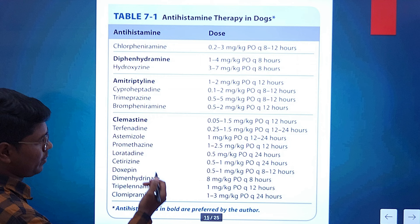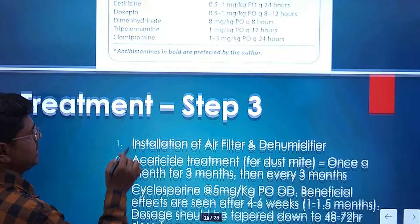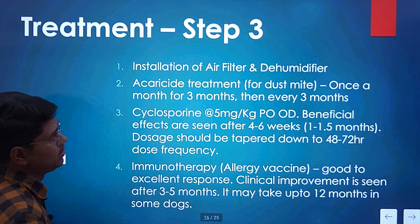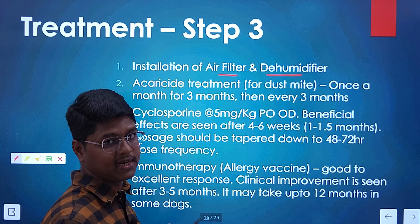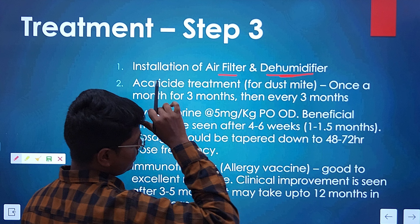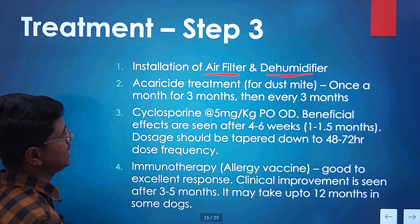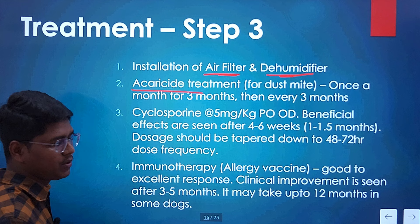These are some common antihistaminics you can use — you can pause the video and take a screenshot, or refer to the Small Animal Dermatology book for the dose chart. Step 3 is to treat the allergen load. You can install an air filter or dehumidifier in the room where your dog lives, as allergic diseases worsen with high humidity. Some animals may be allergic to dust mites — for these, do acaricide treatment in your home once a month for 3 months, then every 3 months.